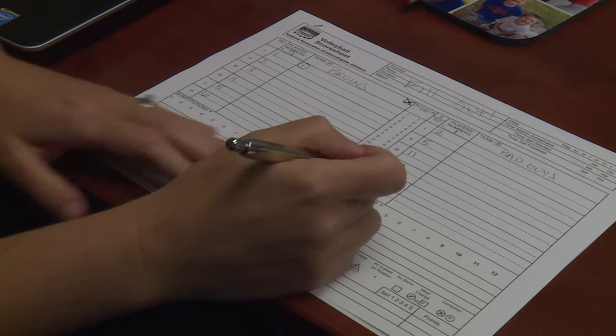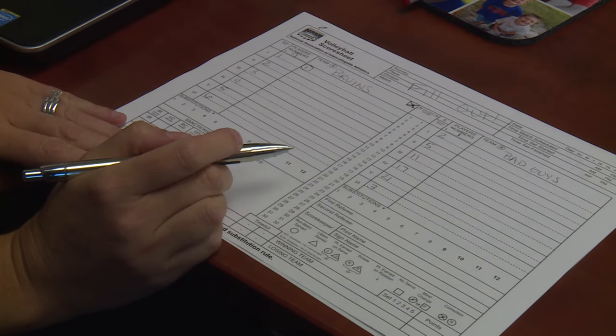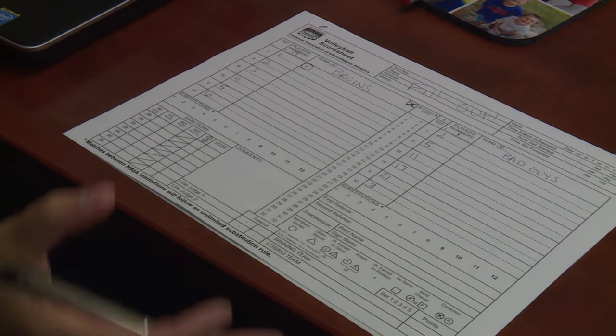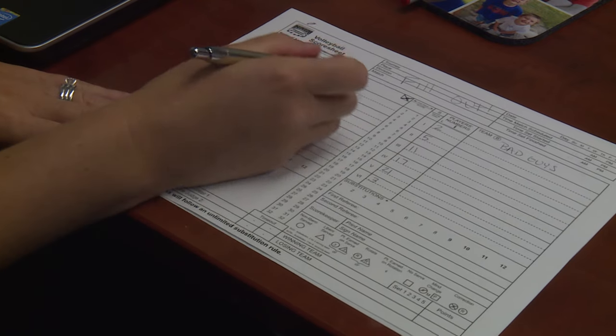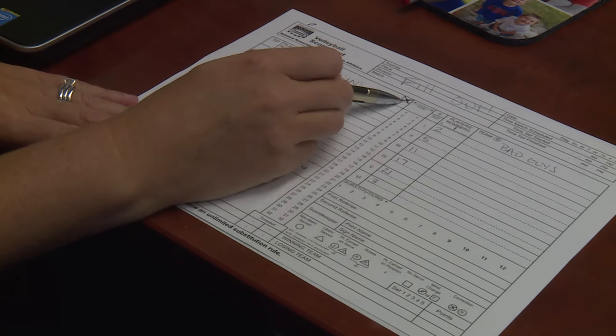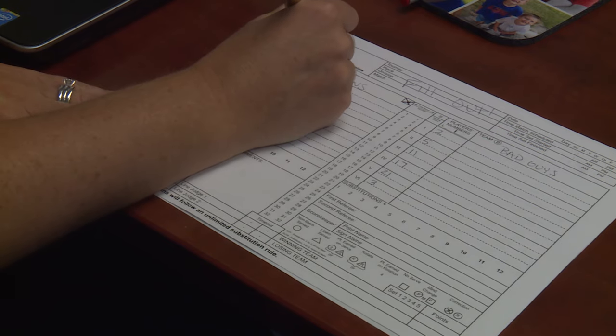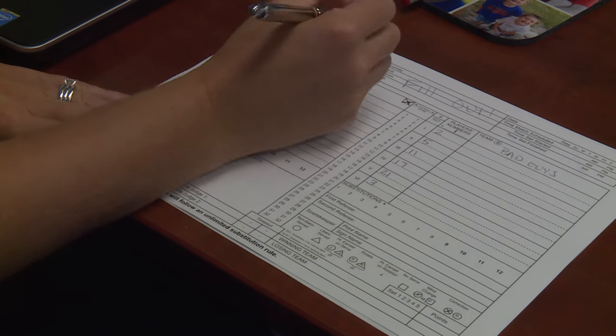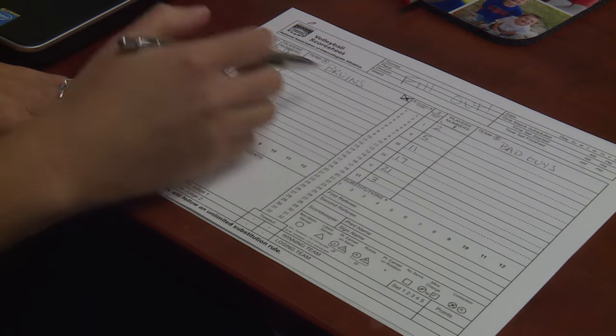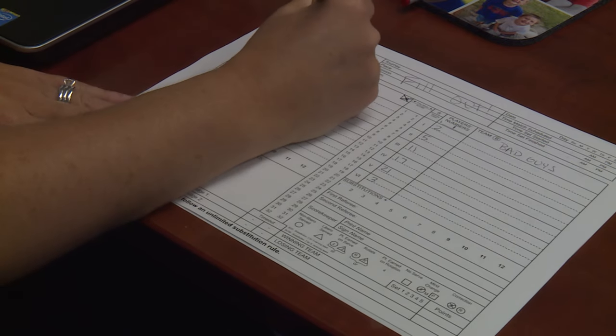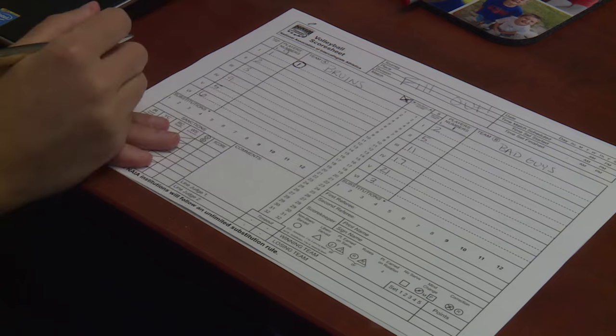So I filled out the lineup already. Everything is kind of set. You just kind of sit there until the game starts. And then once the first serve happens, so they blow the whistle. Immediately as soon as they do the whistle, don't do it before they blow the whistle, mark a circle.